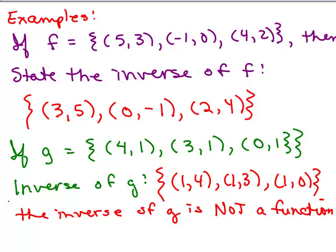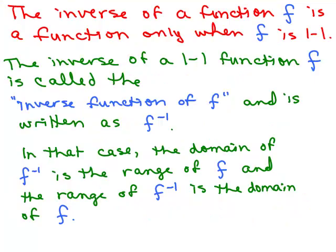So the question is: when is the inverse of a function also a function? The inverse of a function f is a function only when f is one-to-one. So the inverse of a one-to-one function f is called the inverse function of f, and is written as f with a little negative 1. Now, f is not a variable in this case — this does not mean 1 over f. We have to be careful.